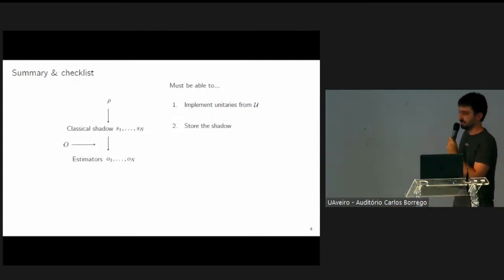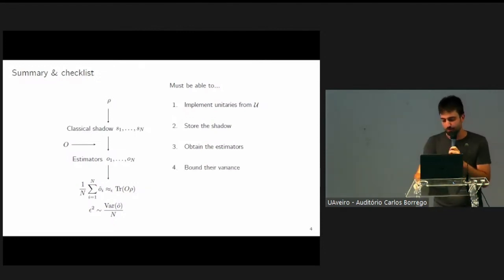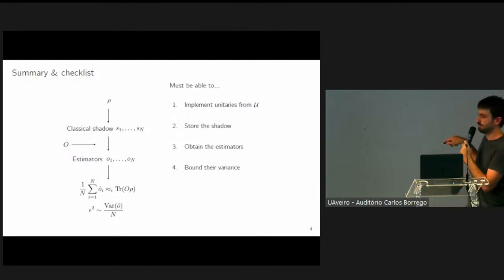Once we have our shadows, we use it to construct these estimators given an observable. But this is also something that the classical computer must be able to do. It's not obvious, for example, that this channel is efficiently invertible. Once we have the estimators, we use it to compute the expectation value. But since we only have a finite number of samples, this will have some error. This error is controlled by the variance, and so we will also have to bound the variance of these estimators in order to keep this epsilon error under control and know how many samples do we need.